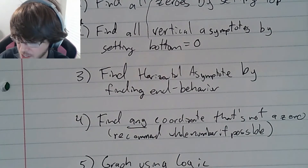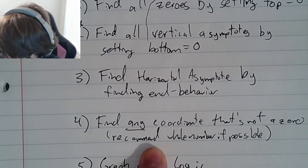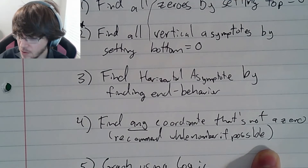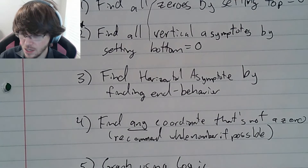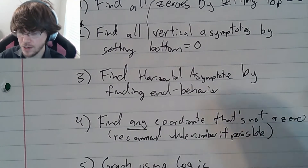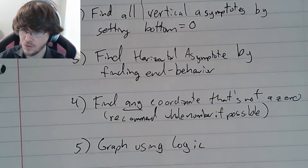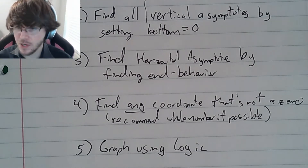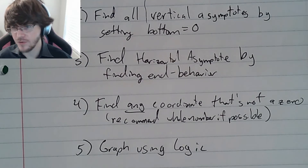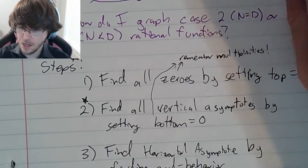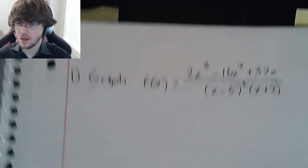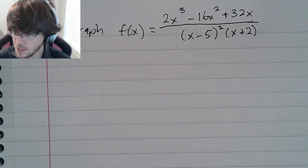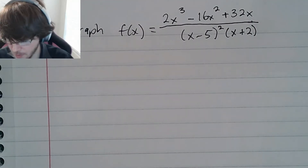You need one coordinate to start your graph, and then the rest you're going to graph using logic. Those are all the steps we need to follow. Let's begin our very first example. I recommend pausing and writing down the example first, and then we'll take it step by step.